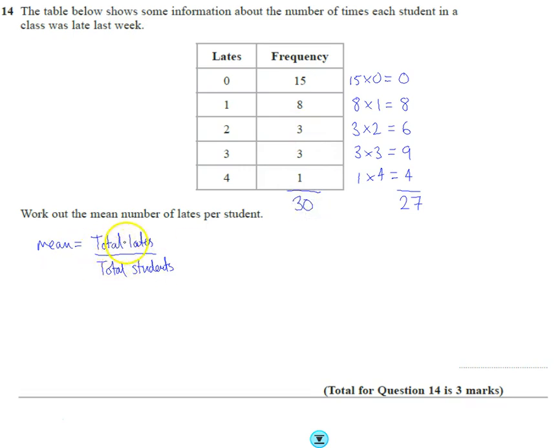So let's go back to the mean. To work out the mean, I'm going to find the total of all the lates, which we now know is twenty-seven, divided by the total number of students, which is thirty.